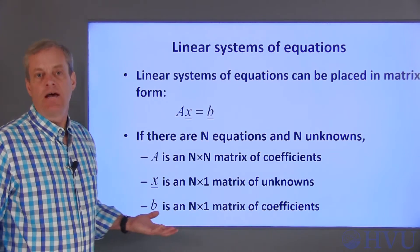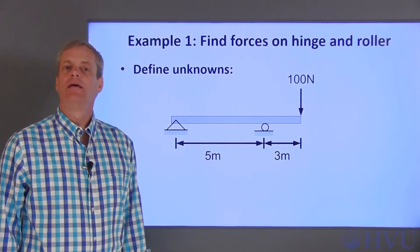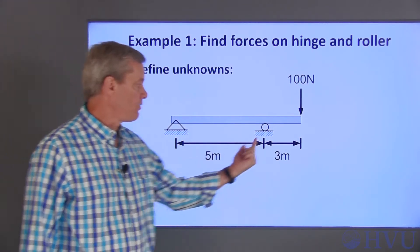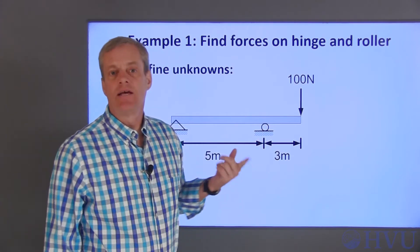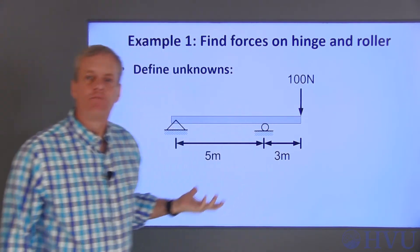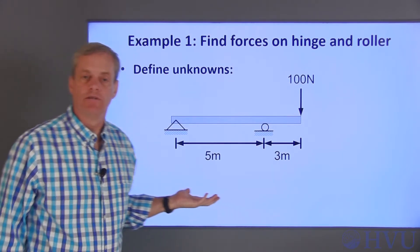Let's do an example to see how it works. In this example, I have a beam that's supported with a hinge on one end and a roller here. I'm applying a 100 Newton force straight down at this end of the beam. The first thing I need to do is define the unknowns and write the equations governing the system.